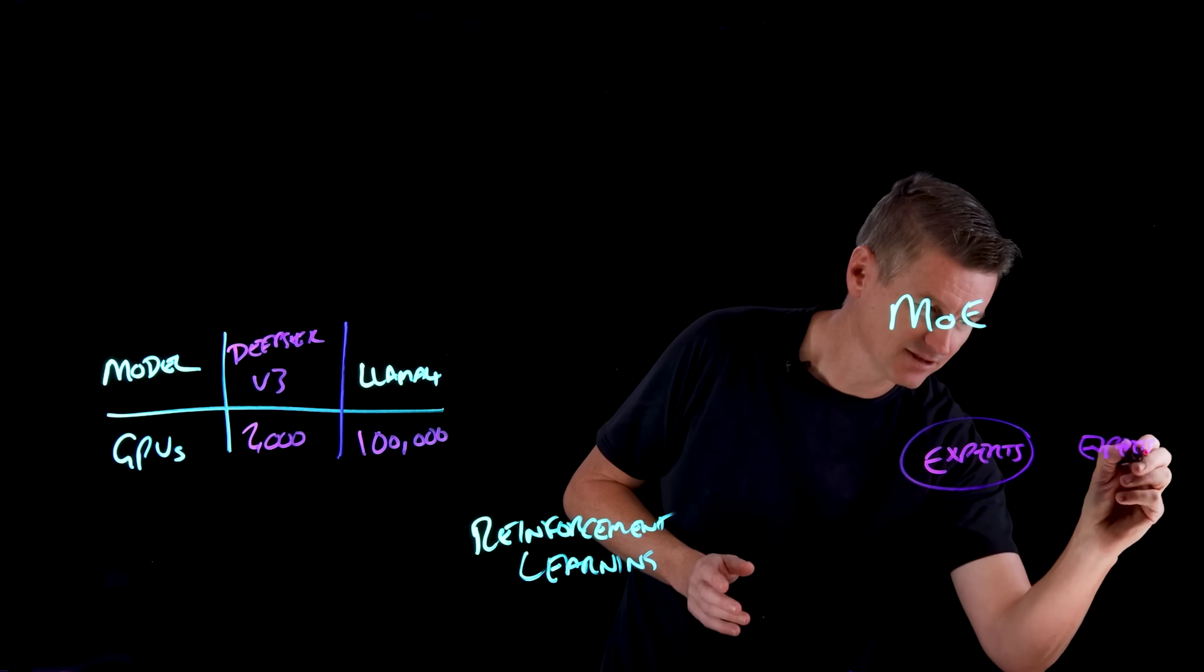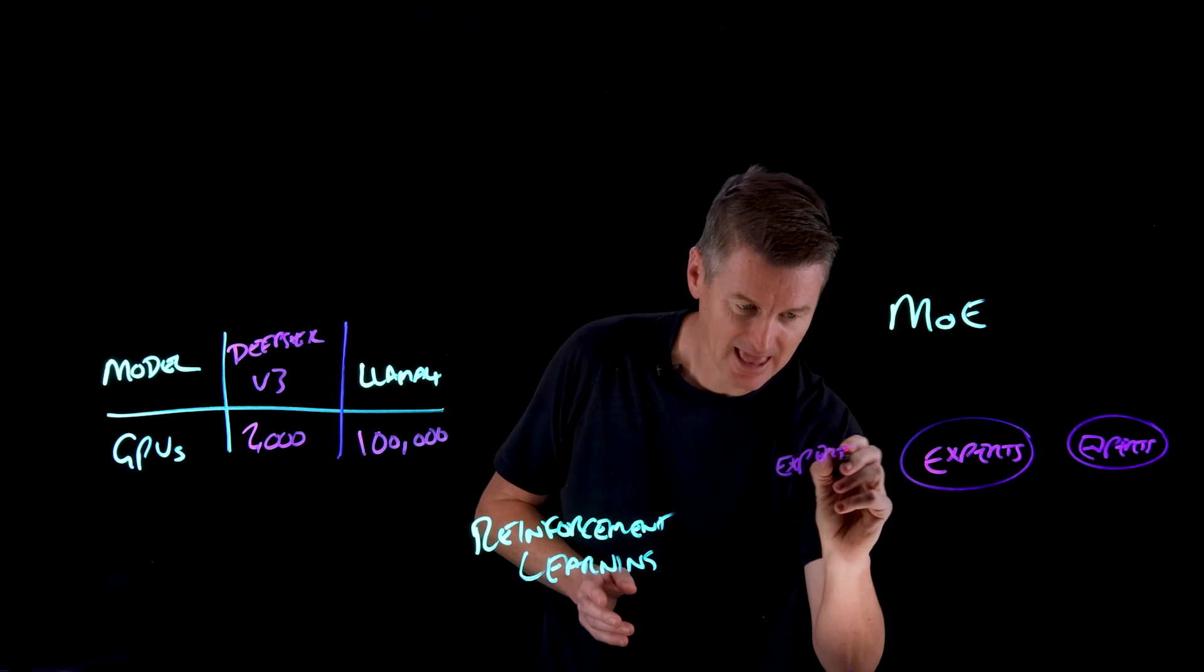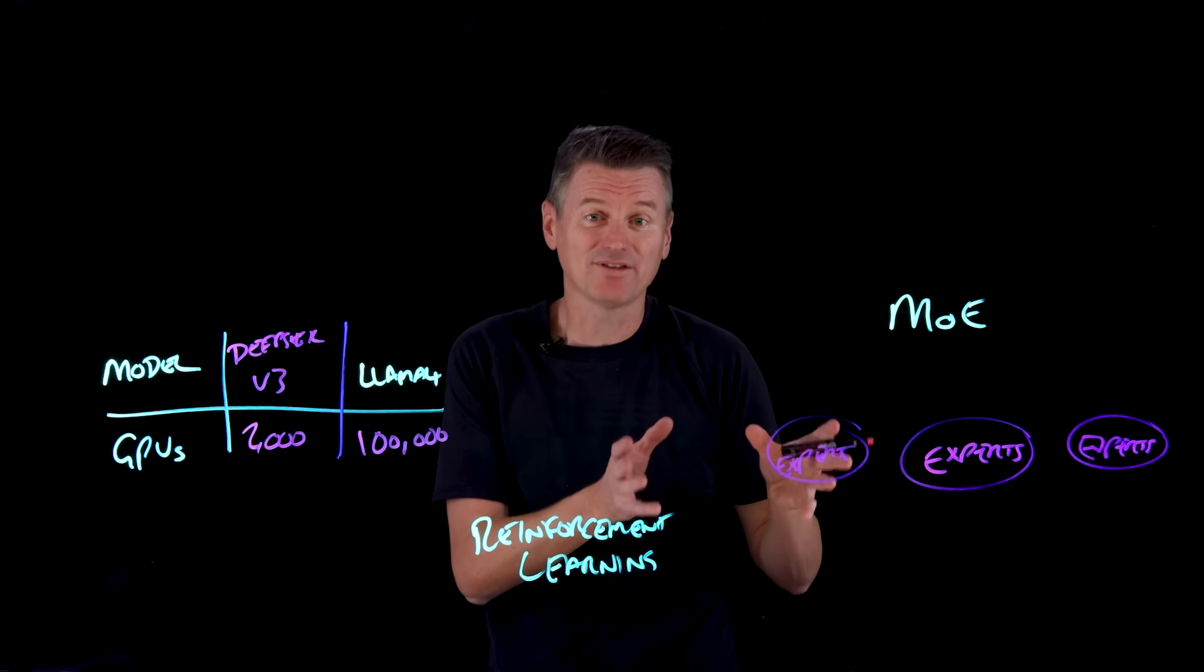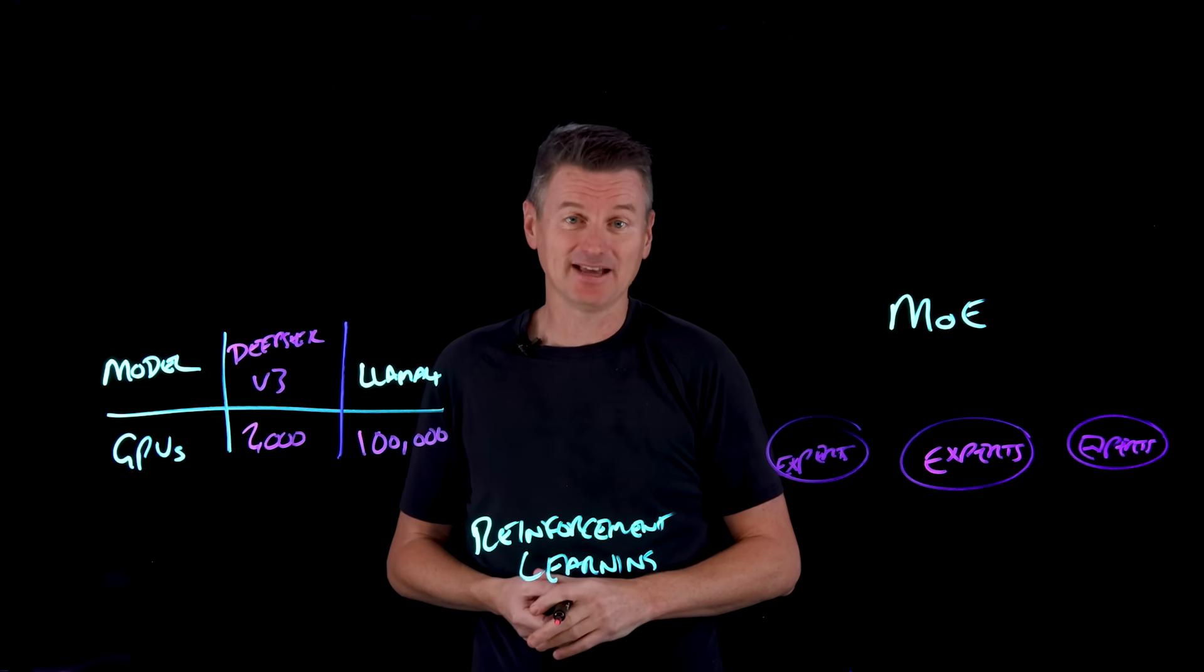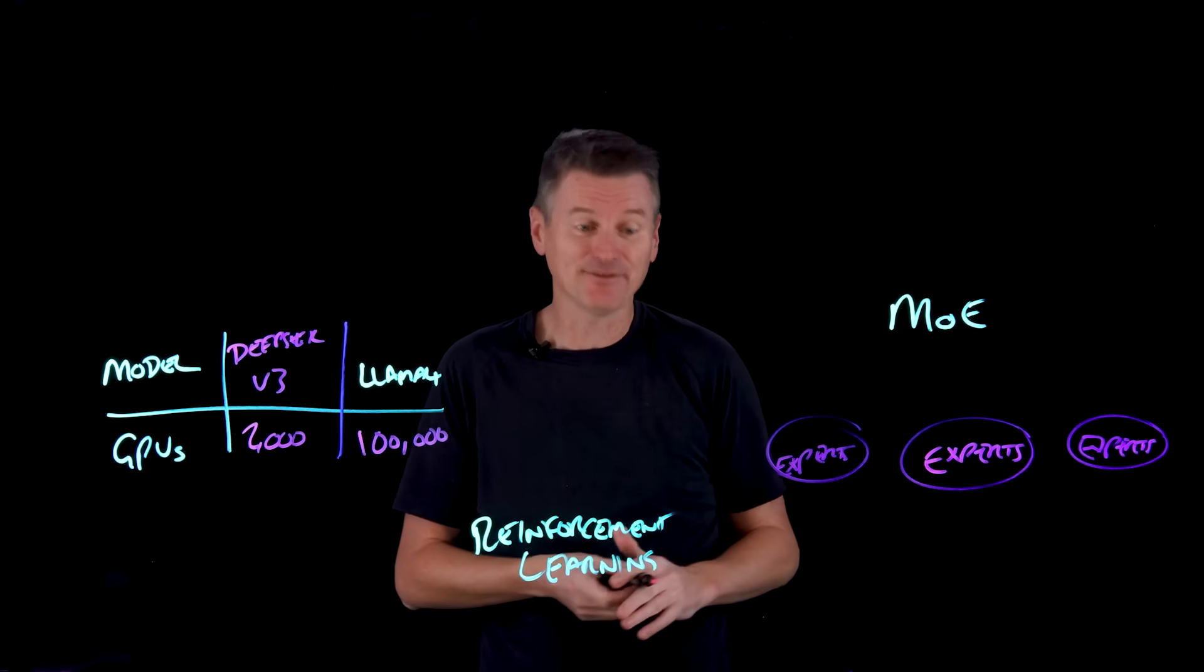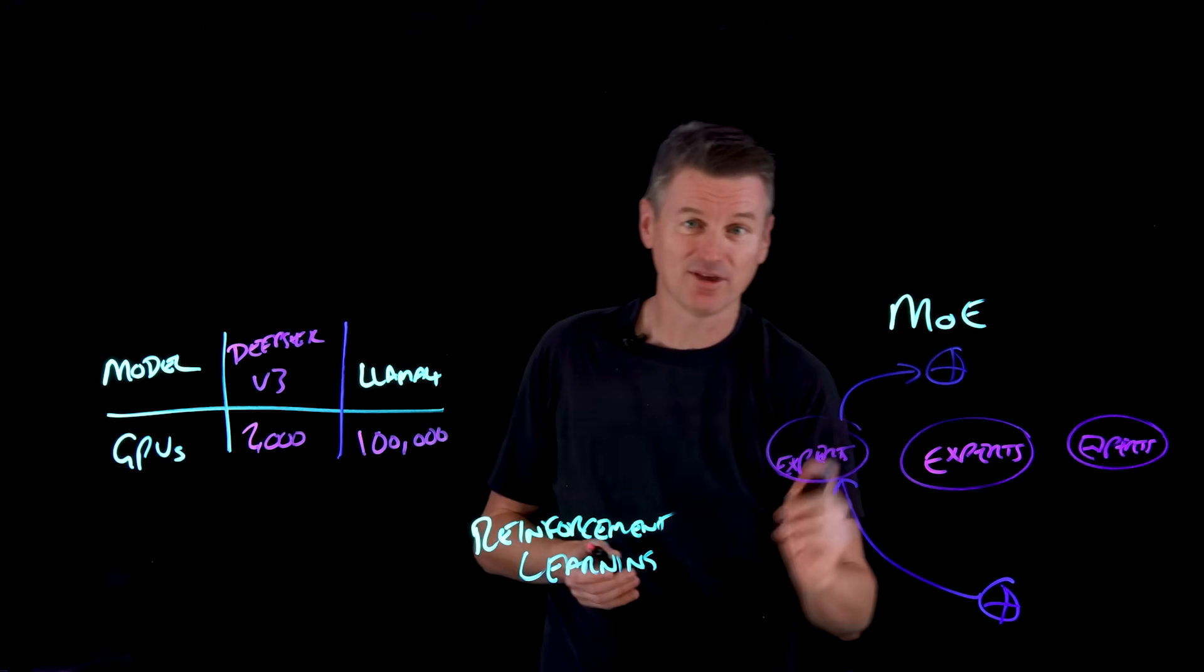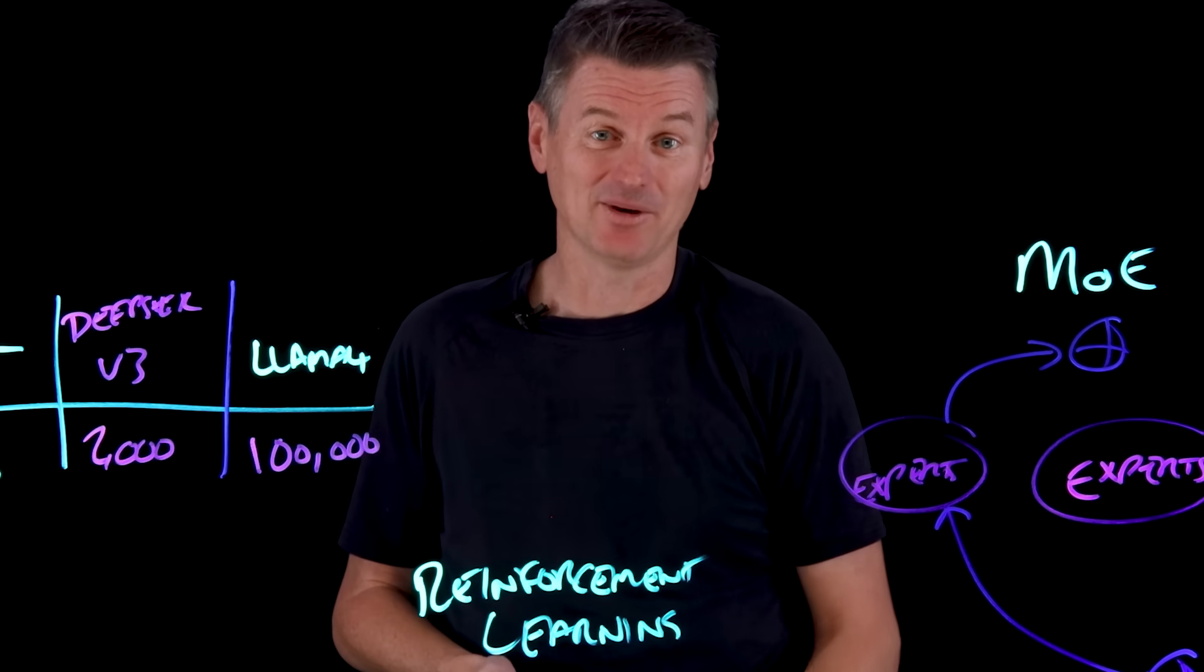So in my little neural network here, I'm going to create three experts. And a real MOE architecture probably have quite a bit more than that. But each one of these is specialised in a subset of the input data, and the model only activates the specific experts needed for a given task. So a request comes in, we activate the experts that we need, and we only use those, rather than activating the entire neural network.